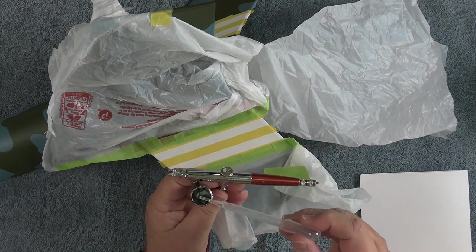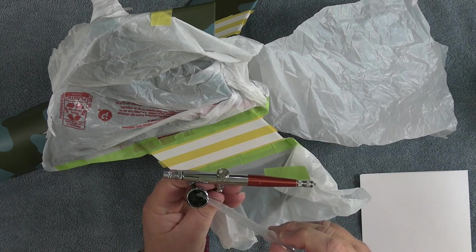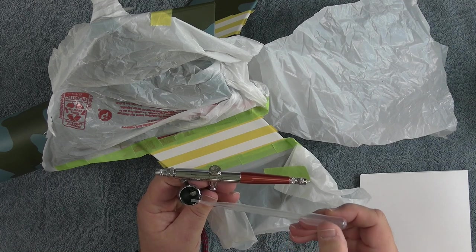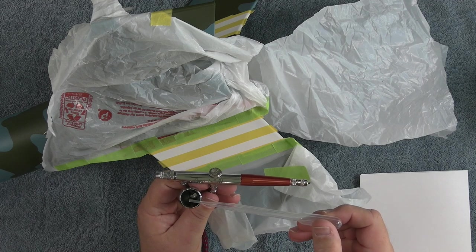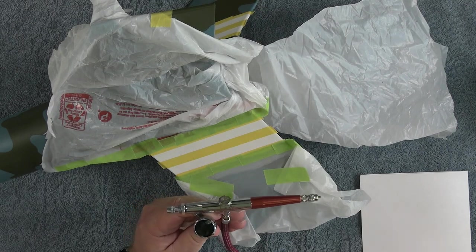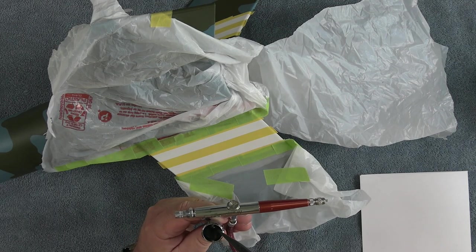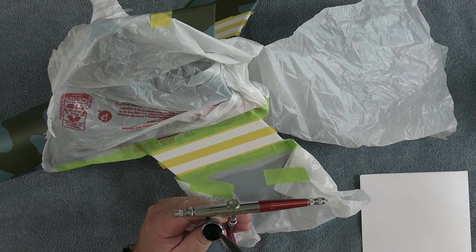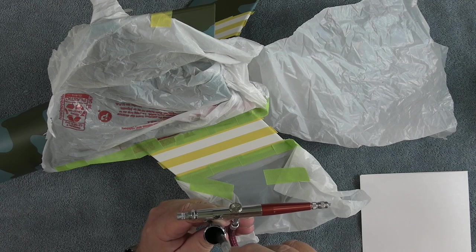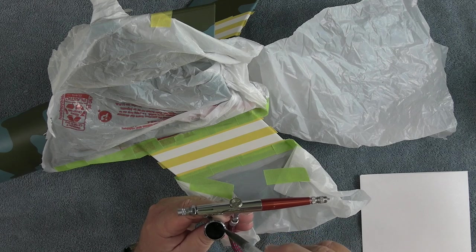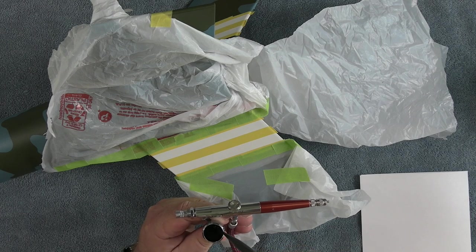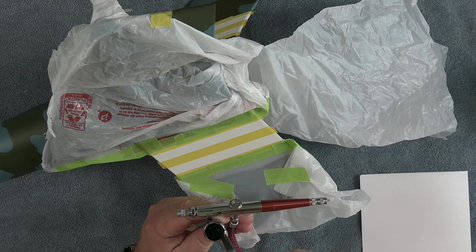We'll start by putting some thinner in the color cup. This is an inexpensive little pipette, lab pipette. You can buy a box of a hundred on these on Amazon for ten dollars or less. Now I'm adding paint to the brush using the same pipette. I'll use the pipette also to mix it. I'll draw the paint back up into the pipette a few times and squeeze it out into the color cup.